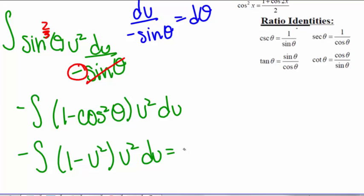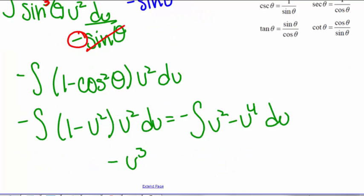Which is equal to the integral of u squared minus u to the fourth du. So that will give us negative quantity u cubed divided by 3 minus u to the fifth divided by 5.